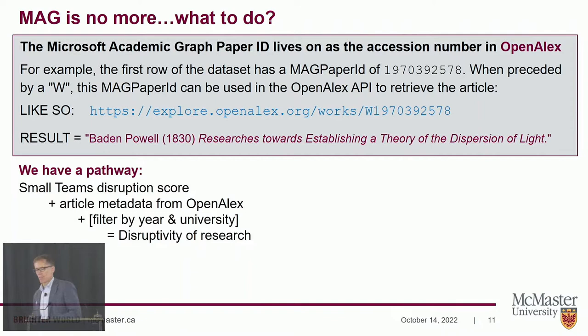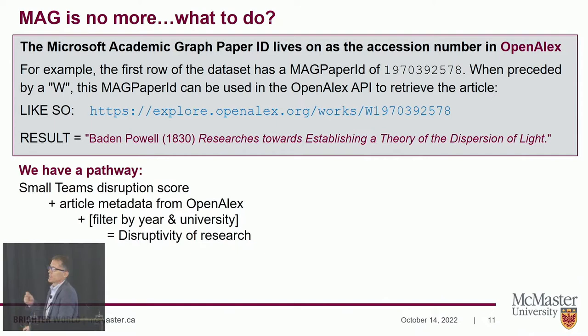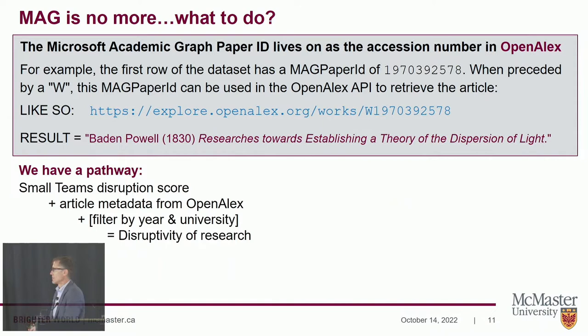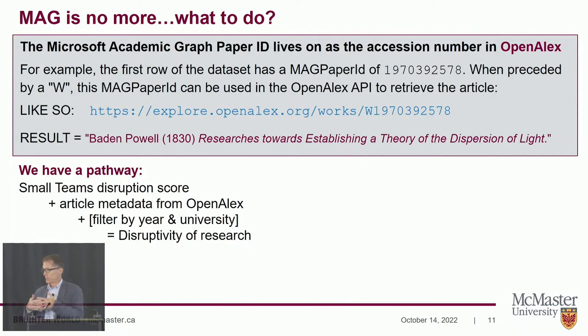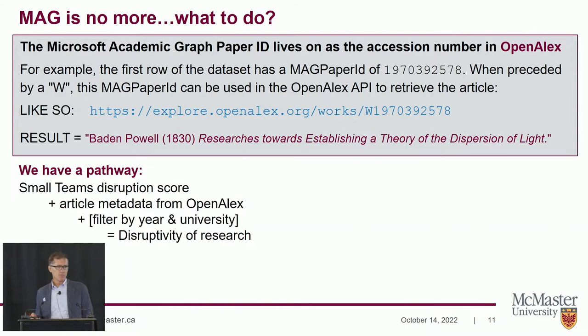So the Microsoft Academic Graph is no more, but it lives on in OpenAlex. You can retrieve the metadata for a given article using the URL explorer.openalex.org with the MAG paper ID at the very end. There's the solution: we've got the small teams dataset, and we know how to resolve the metadata by linking it with OpenAlex. But that's just one article at a time, and the small teams dataset is 19.4 megabytes of text — so I'm not going to do this one by one.